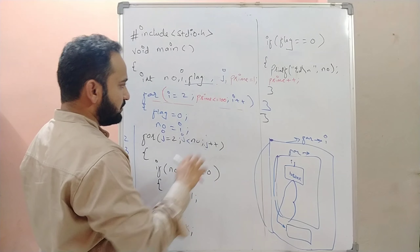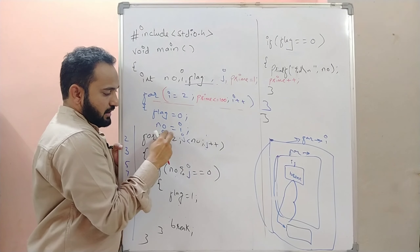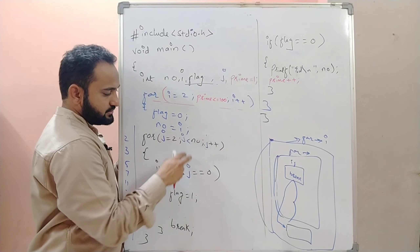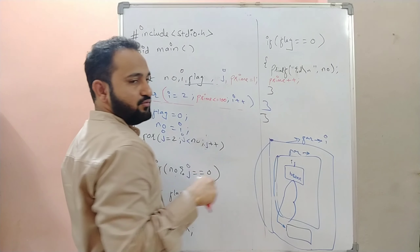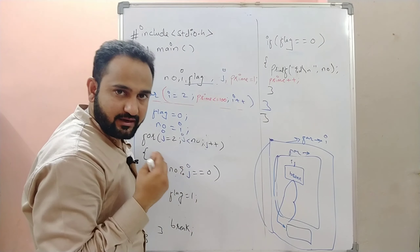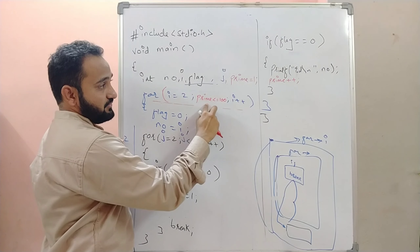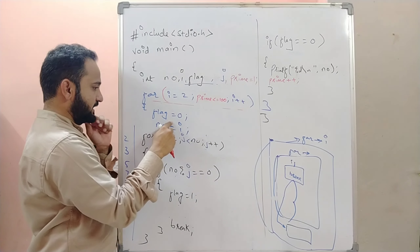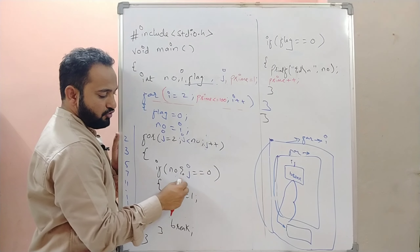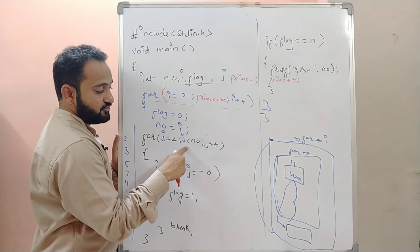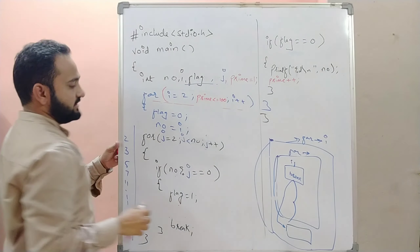Let's trace through. When `i = 2`: flag is set to zero, the inner loop checks `2 < 2` — condition is false, we come out. Flag is still zero, so we print the first prime number, two, and increment `prime` from one to two. Next iteration: `prime = 2`, which is less than or equal to 100, so we continue. Flag is reset to zero, `i = 3`. Inner loop: `2 < 3` — satisfied. We check `3 % 2 == 0` — no. `j` becomes 3, `3 < 3` — false, exit. Flag is zero, so we print 3.